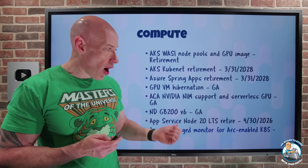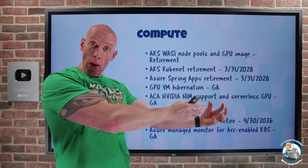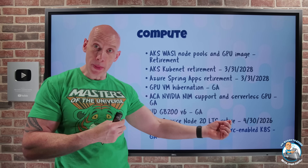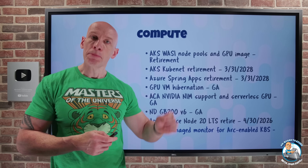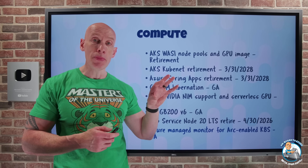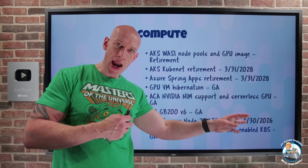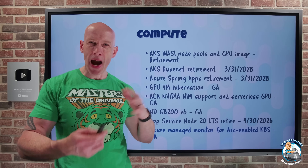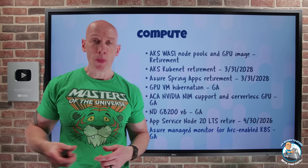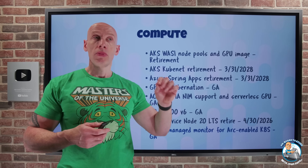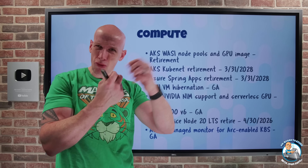Azure managed monitoring for Arc-enabled Kubernetes has gone GA. Azure Arc brings the Azure control plane to both OS instances and CNCF-compliant Kubernetes deployments. Now for Arc-enabled Kubernetes, you can leverage the Azure Monitor managed service for Prometheus, which automates and manages the collection, storage, and interaction with Prometheus metrics stored in a special Azure Monitor workspace. You can then use the managed Grafana service in Azure to query those metrics and create dashboards — Prometheus and Grafana work very well together.